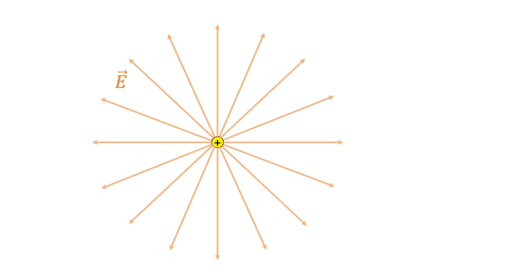Imagine we have a positive charge in this region. This positive charge generates an electric field in its vicinity. If we wish to find the electric field at point P, we begin with Coulomb's Law and then use the definition of electric field to calculate the electric field at point P.